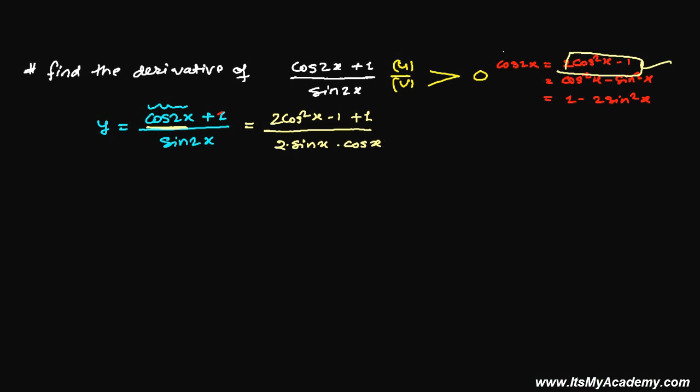Now you can cancel many things. Minus 1 and plus 1 will cancel up, this 2 and this 2 will cancel up, and this square and this cos will cancel up. You'll get cosx over sinx.